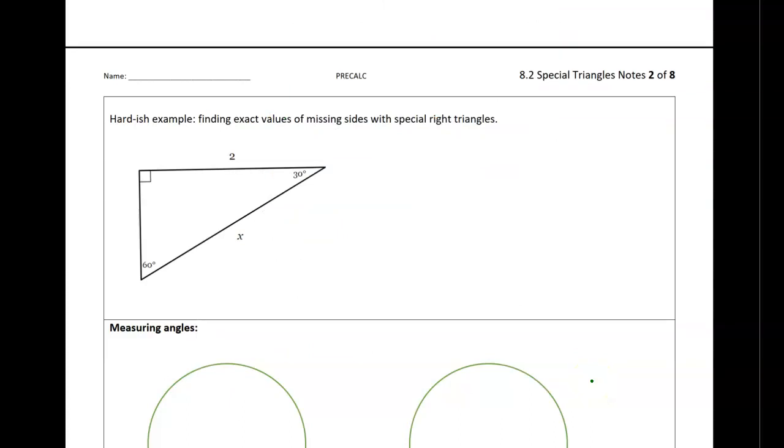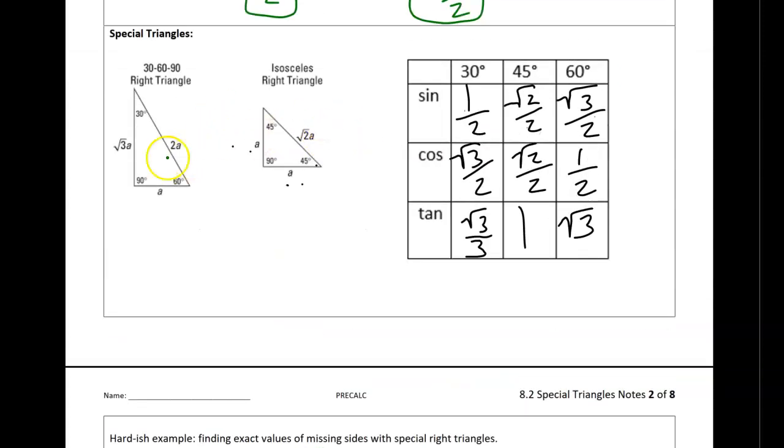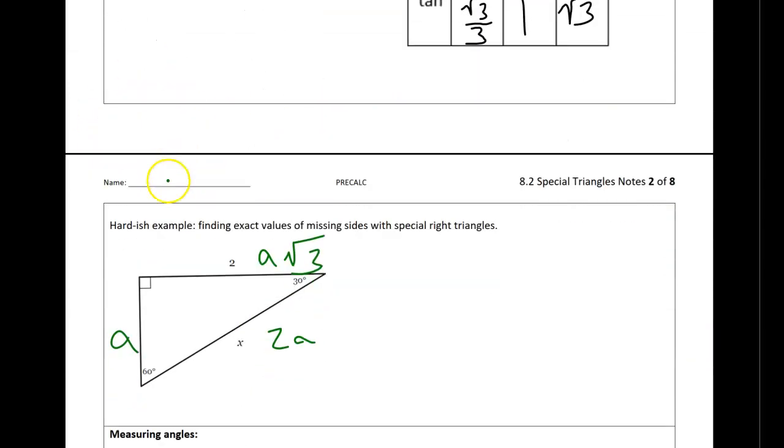All right, so a couple more things to cover here. The first is just solving a triangle using our special triangles relationship. So I'm going to label, just like I did on the previous page, sort of like we label sine, cosine, tangent. So a is the side opposite 30. 2a is the hypotenuse. Root 3a is the side opposite 60. And then I'm just going to make equations.